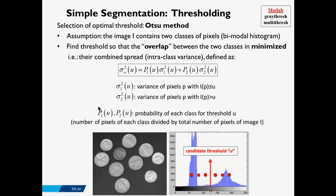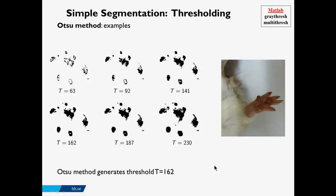There is a statistical method to find the optimal threshold called the Otsu method. This method assumes the image has two classes of pixels — i.e., the histogram has two modes. It finds a threshold so that the overlap between these two classes is minimized. To do this, it uses the combined intraclass variance: the sum of the variance of pixels below the threshold and the variance of pixels above the threshold, each weighted by the probability of its class. We move the threshold and find the value where this combined variance is minimized.